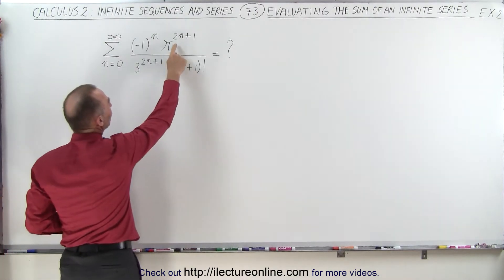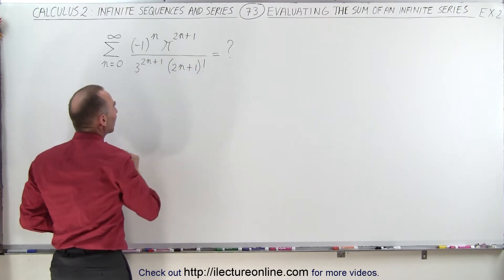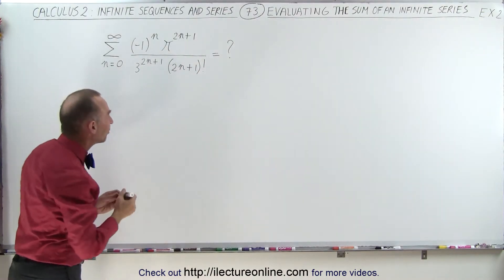Notice that we have a pi to the 2n plus 1 in the numerator and a 3 to the 2n plus 1 in the denominator. Maybe we can rewrite the sum as follows.